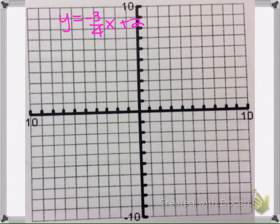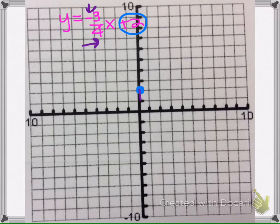So to graph, we're going to take our y-intercept right here, this positive 2, and graph it. And then our slope is negative 3 fourths, so we're going to go down and to the right. So we're going to go down 3, so 1, 2, 3, and then over 4. And that's where our point will be.